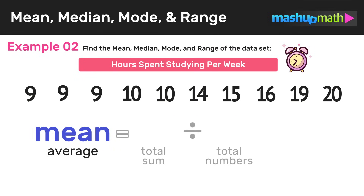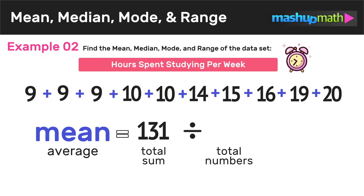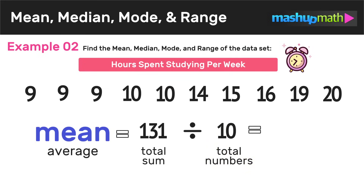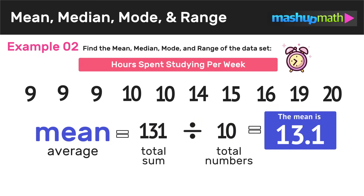Now we can start by finding the mean or average of the data set by dividing the total sum by the total number of numbers. In this example, to find the total sum, we're just going to add up all of our numbers, and we should end up with a sum of 131. The data set has 10 total values, and doing that gives us a quotient of 13.1. So we can conclude that the mean of the data set is 13.1. And just so you know, getting a result that has a decimal is totally fine.